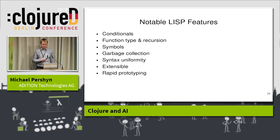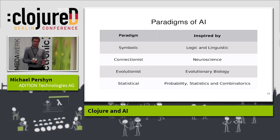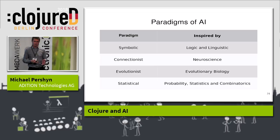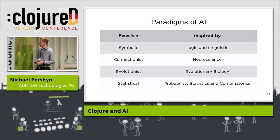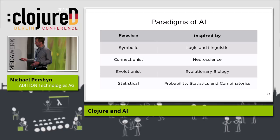As research evolved, several paradigms became established. There is the symbolic paradigm, inspired by logic and linguistics. There is the connectionist paradigm, inspired by neuroscience — how neurons work. There is the evolutionist paradigm, inspired by evolutionary biology, which I can refer to as genetic programming. And there is the statistical paradigm, inspired by probability, statistics, and combinatorics. Systems based on these principles can also be intelligent.